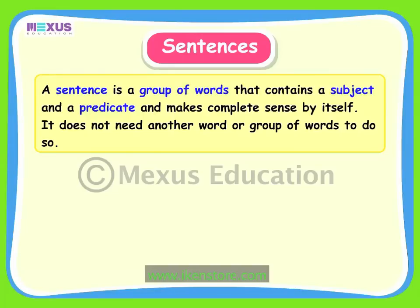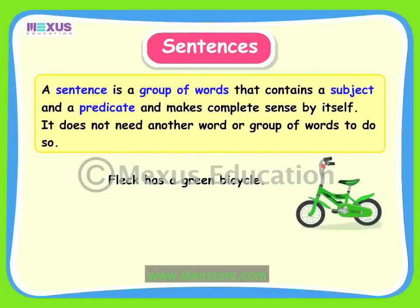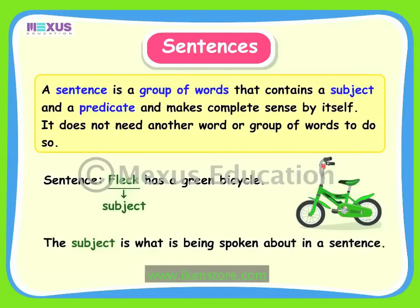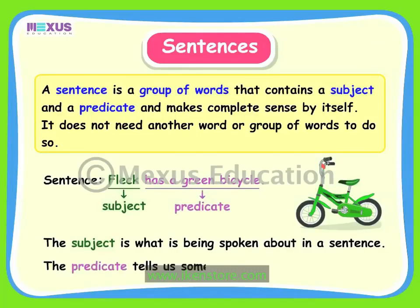Let us look at an example. Fleck has a green bicycle. This group of words is called a sentence — it is a group of words that makes complete sense. Fleck is the subject in this sentence. The subject is what is being spoken about in a sentence. Has a green bicycle is the predicate; the predicate tells us something about the subject.